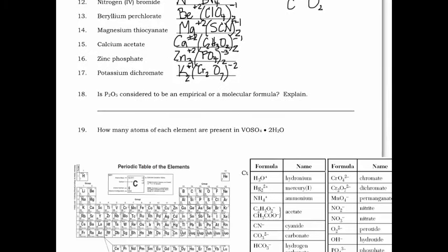Next section: is P₂O₅ empirical or molecular? Do the subscripts have a common factor? The answer is no, so it's empirical. Your reason could simply be: it already is the simplest ratio of those elements.